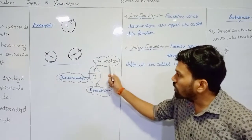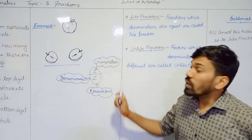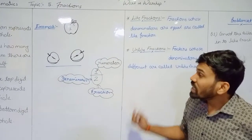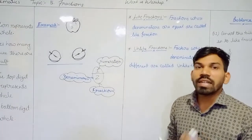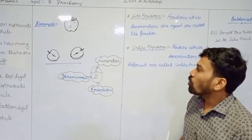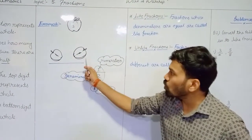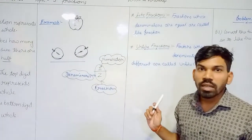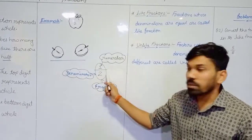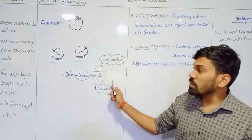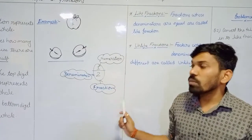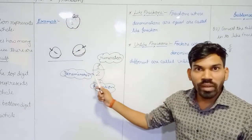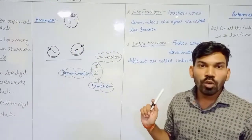So one becomes the numerator and two becomes the denominator. The numerator is the top digit that represents the part of the whole — the whole is two and the part of that whole is one. The denominator is at the bottom and represents the whole — meaning the total two pieces of apple.